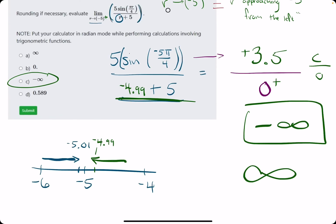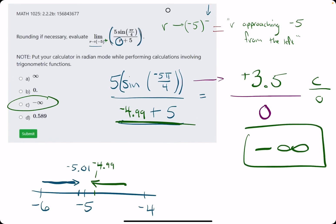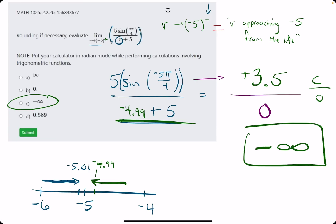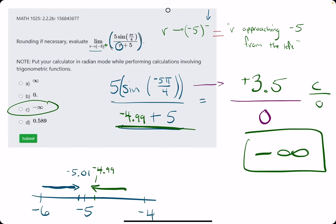There's a difference approaching from the left or right. Pay close attention to the sign of the value on top and the sign of the 0 on the bottom in situations like this. This is a great example. I hope this explanation makes sense. Let me know if you have questions. Thanks.